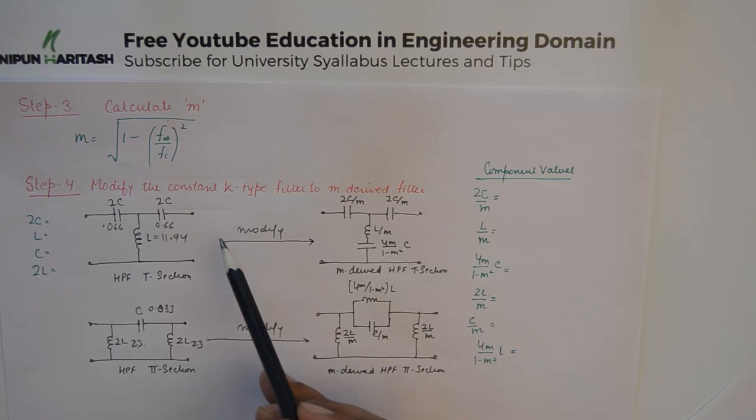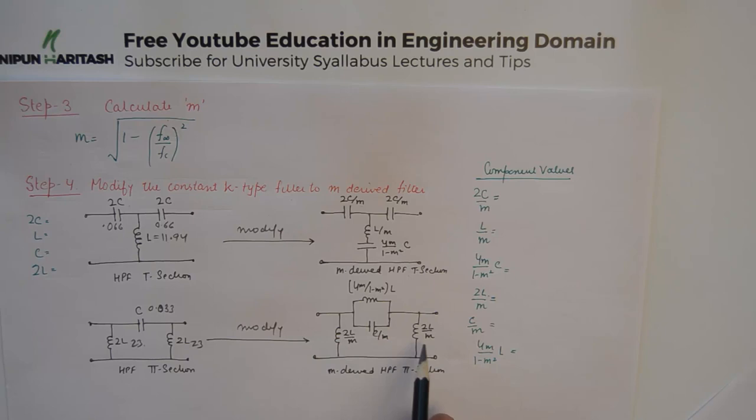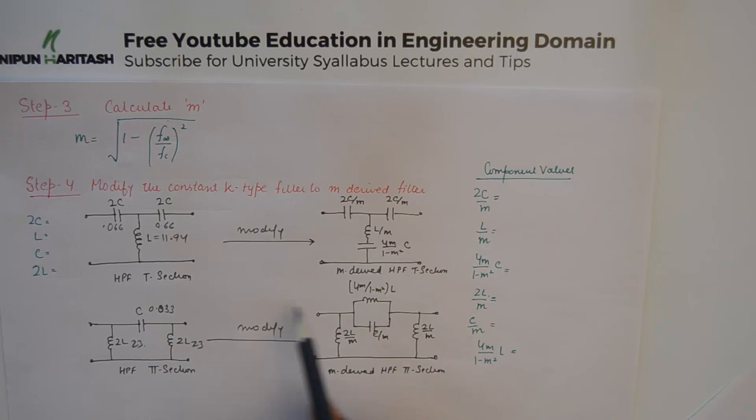This is the modification needed to make the m-derived high pass filter T section. For the Pi section: the shunt inductors 2L become 2L/m in the m-derived filter, the capacitor becomes C/m, and it is accompanied by a parallel impedance of 4m / (1 - m²) × L in the series arm.